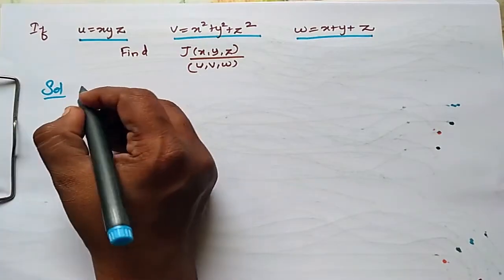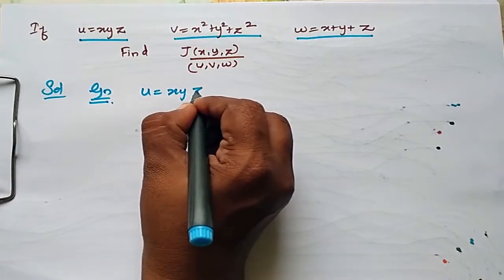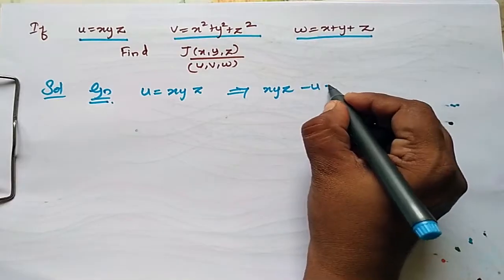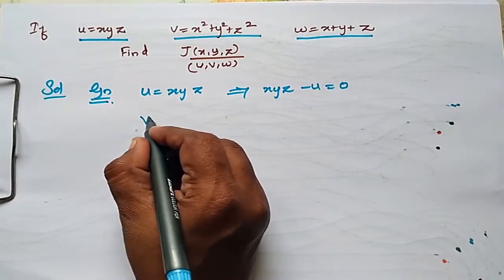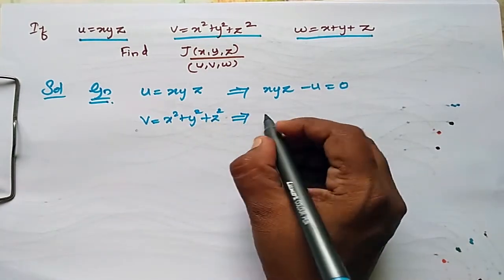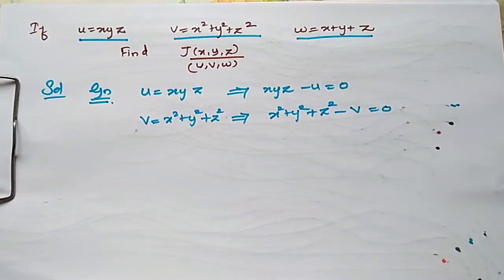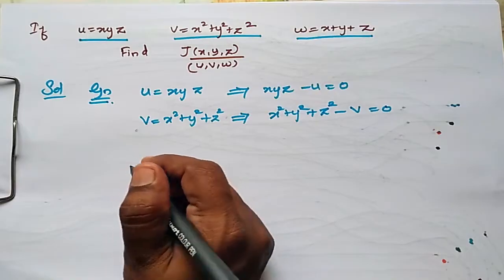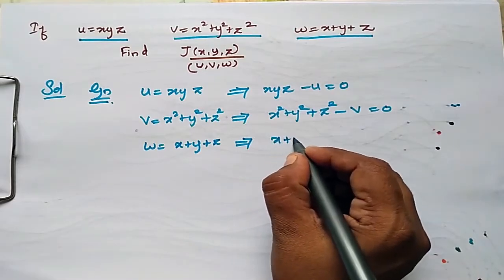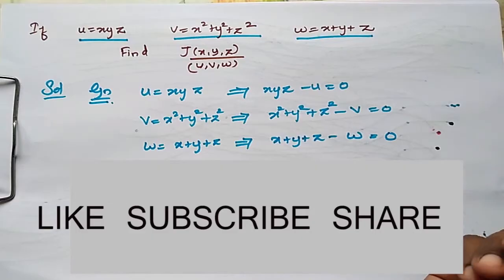We will go for the solution. Given u = x·y·z, therefore x·y·z minus u is equal to 0. v = x square plus y square plus z square, so x square plus y square plus z square minus v is equal to 0. w = x plus y plus z, so x plus y plus z minus w is equal to 0.